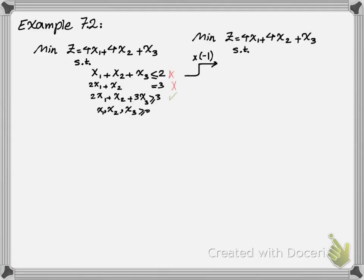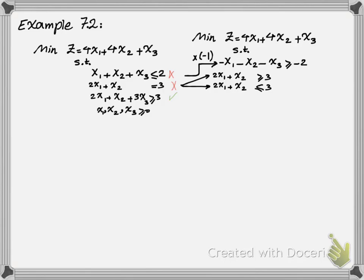For the first constraint, I have to multiply it by negative 1 to make it a greater than or equal equation. Now for the second constraint, to normalize, I have to create two inequalities from the existing equation. If I write 2x1 plus x2 greater than or equal to 3 and once less than or equal to 3, then the combination of these two equations is the same as 2x1 plus x2 is exactly equal to 3. So if I replace that equation with these two inequalities...